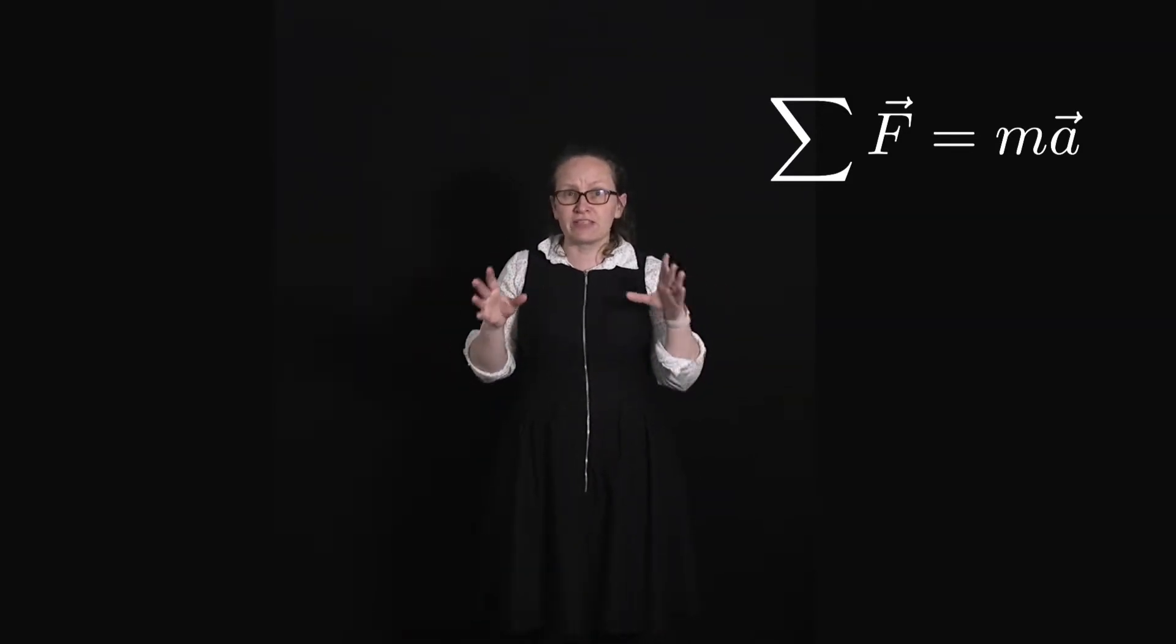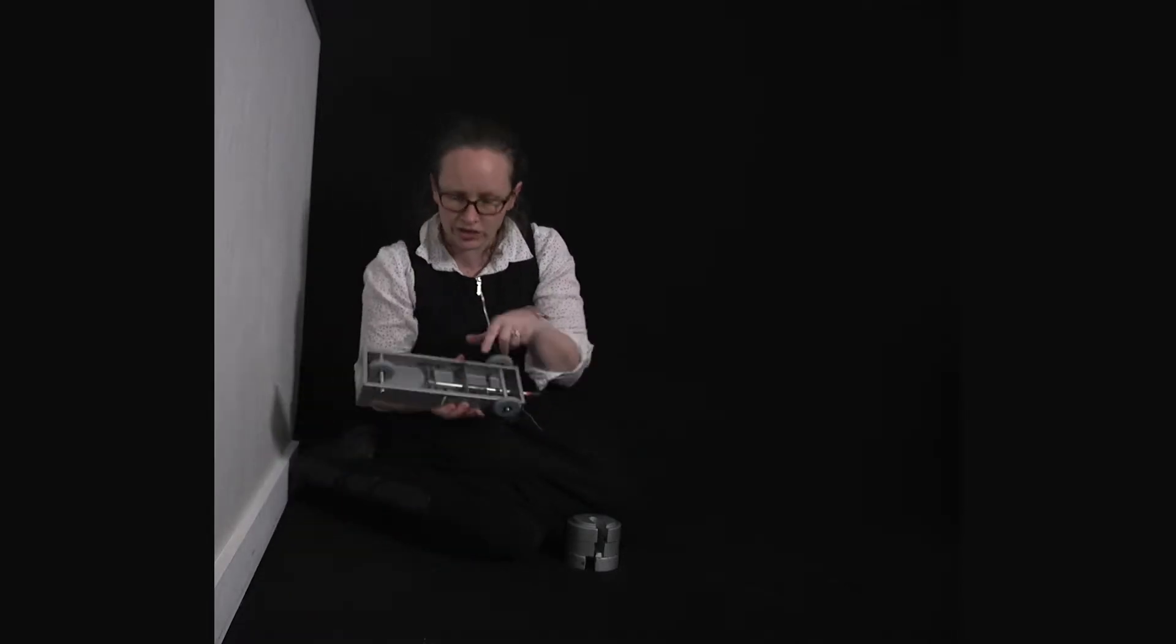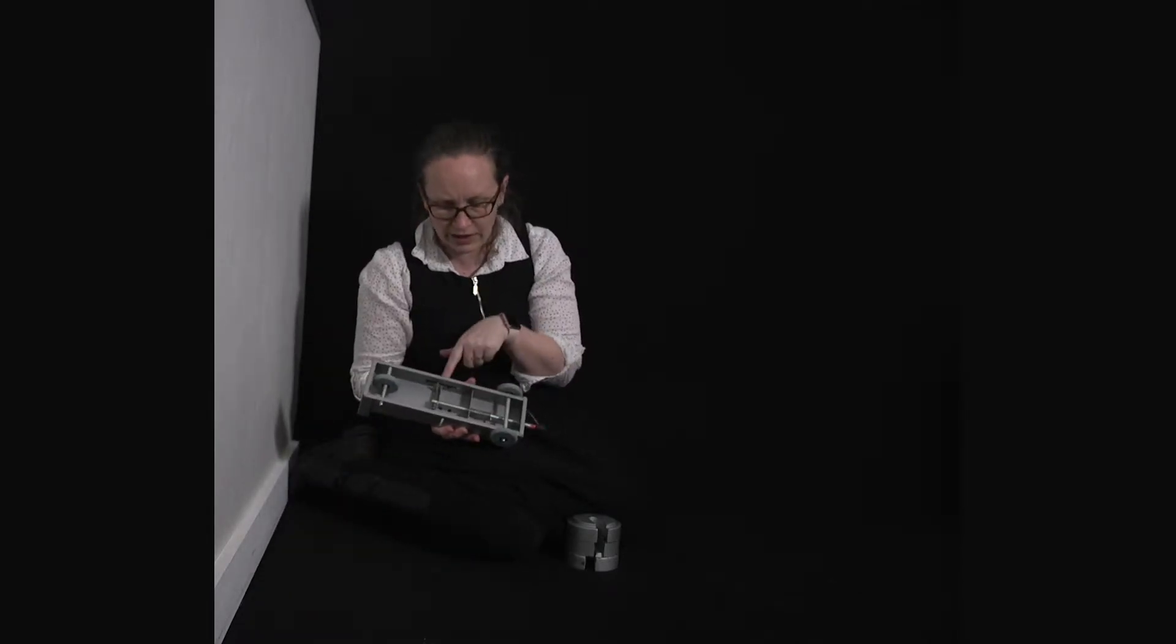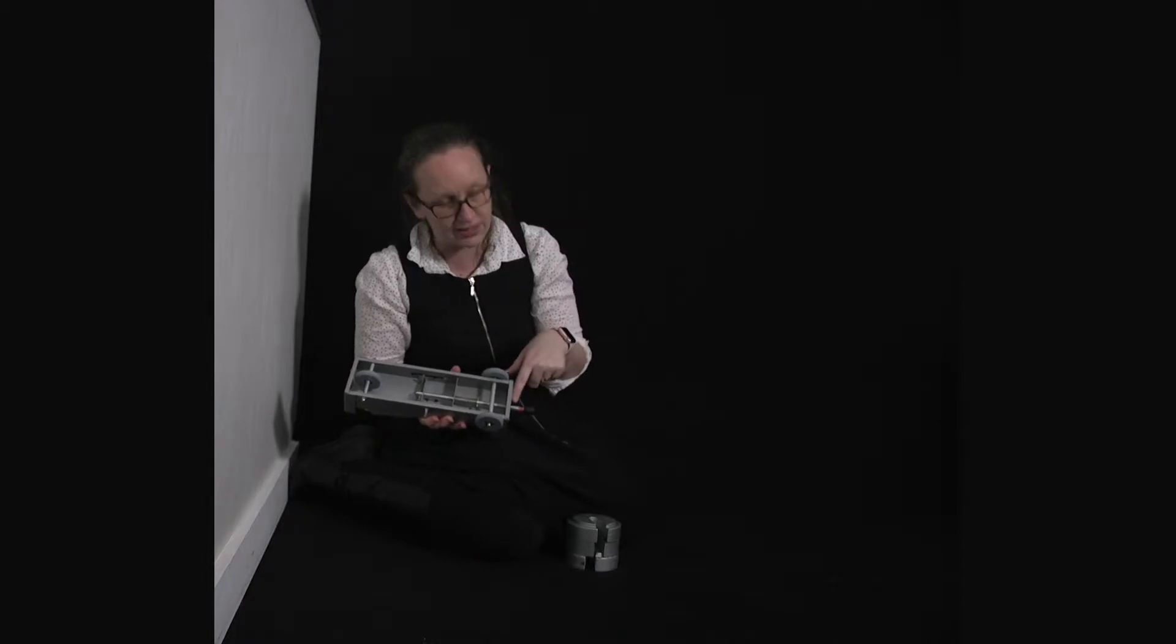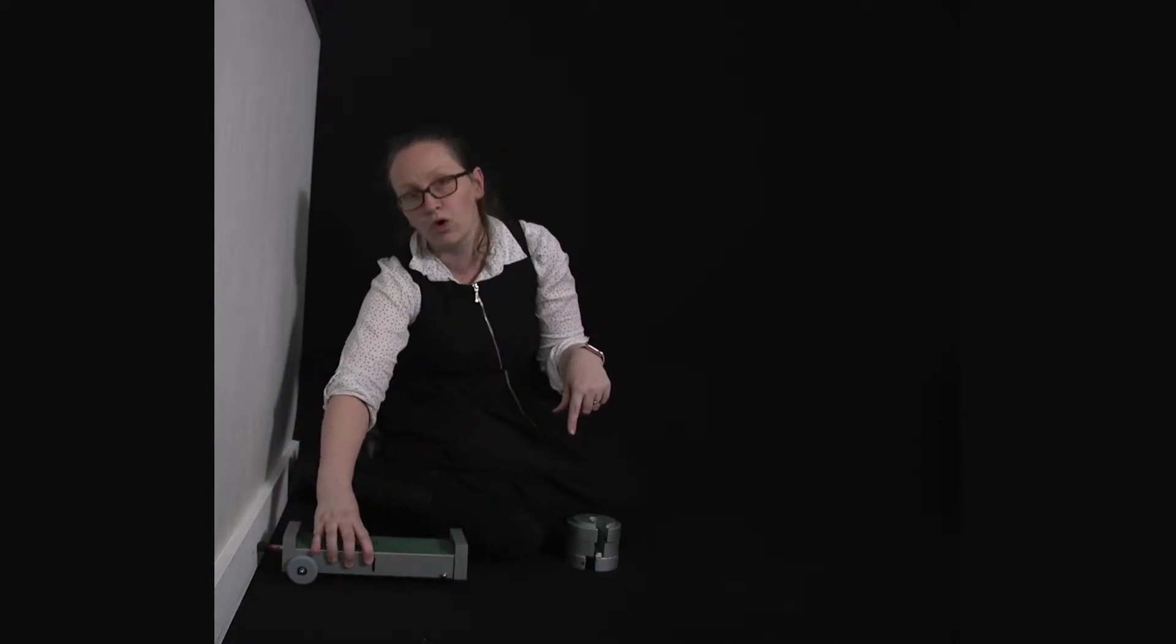Let's have a look at a demonstration now that demonstrates Newton's second law. So what I've got here is a trolley. It's actually got a spring underneath. When I release this spring, it's going to send this plunger out here. And as it plunges up against the wall, it's going to push off from the wall. So this allows me to get the same force on multiple occasions, because I actually have the same energy stored in the spring.